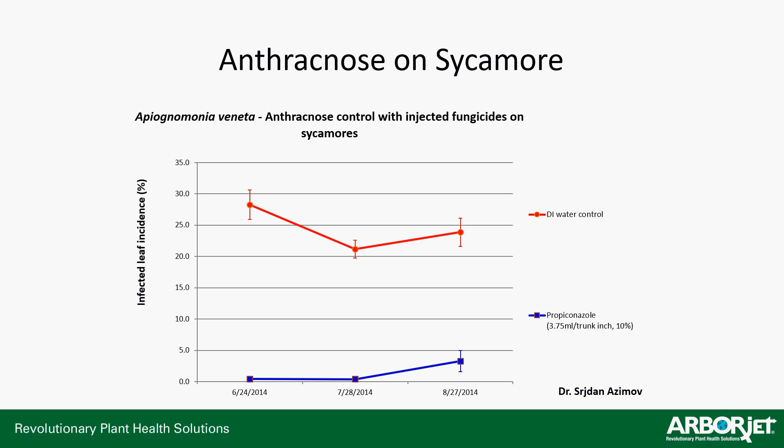The Y-axis — the higher up you go — represents a higher percentage of infected leaf incidence. So the farther up in that graph, the more anthracnose you're seeing. Looking at some data from 2014, you can see that a tree that was proactively treated with Propyzole kept its percentage of infection under 5%.